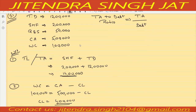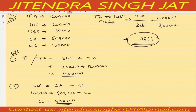Ratio is total assets upon debt: total assets 14 lakh divided by debt 8 lakh equals 1.75 is to 1. Total assets to debt ratio is 1.75 is to 1. I hope the question is clear to everyone.